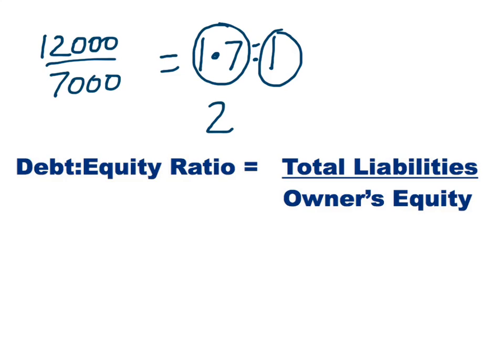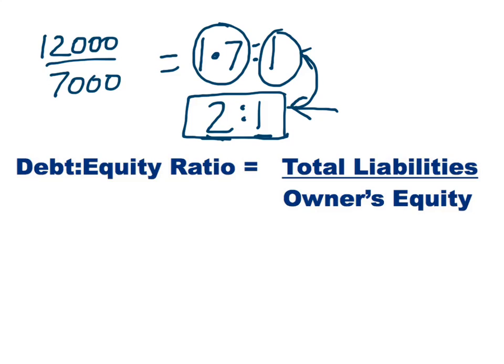If we said that the ratio was 2 to 1, it means that for every dollar the owners put in, they had to borrow $2. The reliance on debt in this second example is greater — they've gone from borrowing $1.70 for every dollar put into the business to borrowing $2 for every dollar. This means the second business has a higher level of gearing — high gearing — while the first has relatively lower gearing.